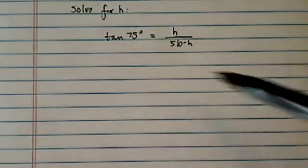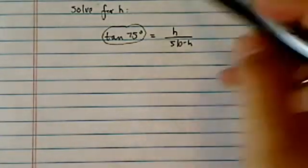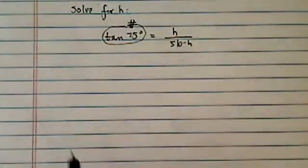Now, tangent of 75, you've got to think of this one as ugly as it is, it's just a number. There's nothing more to it, nothing less to it. It's actually a 3.7 or something. It's a number.